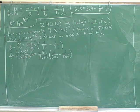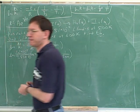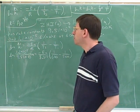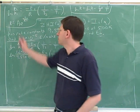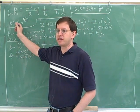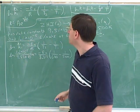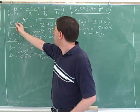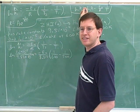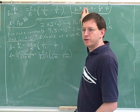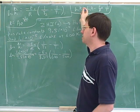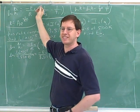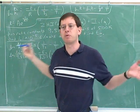It looks like you all picked out the correct equation to use here. Let's talk about that for a second. We've actually learned three equations so far. We started with the basic Arrhenius equation. Then we saw that if we took the log of both sides, we would get another version of the Arrhenius equation. And then we saw if we took two Arrhenius equations and subtracted them, we would get this third form.